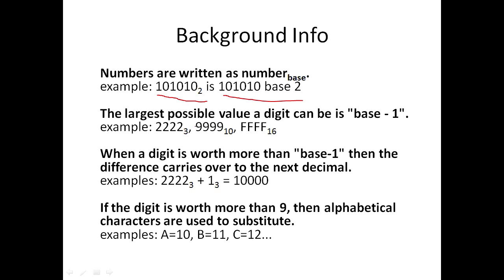Now, one major thing about different bases is the value of each digit. In base 10, the largest number you can have is 9, and you get that because you do base minus 1. So base 10, 10 minus 1 is 9. The largest value an individual digit can be is 9.